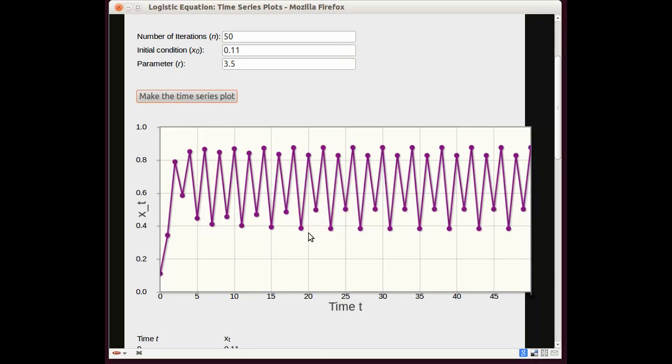And in this instance, the period is not 2, but 4. Start here, go 1, 2, 3, 4. And then we're back where we started. So we would say this is period 4 because it takes 4 iterations to complete one cycle.